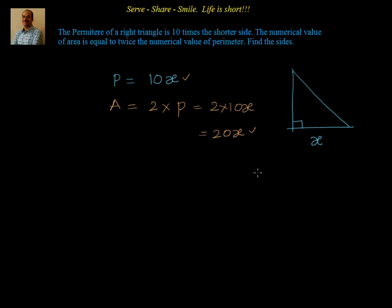These are the conditions given to us as inputs. Based on this we have to find out the sides of this right triangle. Now, when we say right triangle, the first thing we remember is the Pythagoras theorem, because any right triangle must satisfy it. Let us label the vertices A, B, and C.